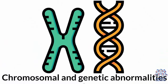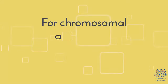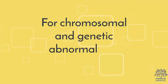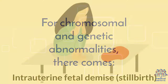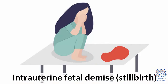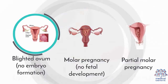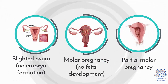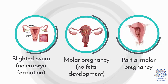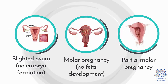Chromosomal and genetic abnormalities can also cause spontaneous abortion. For chromosomal and genetic abnormalities, there comes intra-uterine fetal demise, stillbirth, blighted ovum with no embryo formation, molar pregnancy with no fetal development, and partial molar pregnancy.